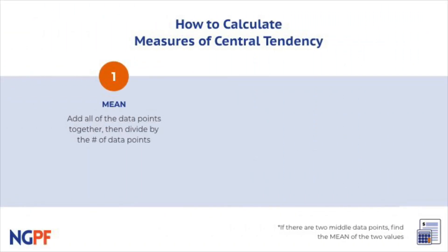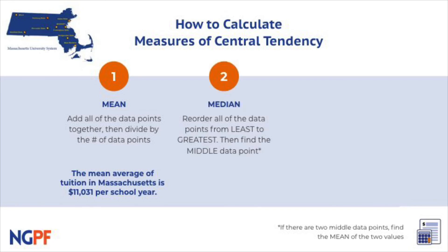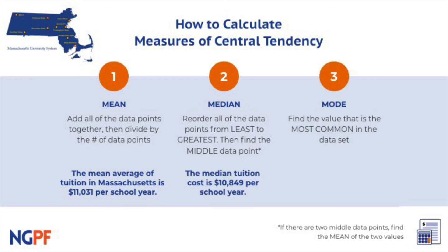Here's a recap. We found the mean or average by adding all the data points together, then dividing by the number of data points. In this example, the mean tuition cost for these nine state schools in Massachusetts is $11,031. We found the median by reordering all the data points from least to greatest, then finding the middle data point, which is $10,849. And we found the mode, which is the most common number in the data set, which is $10,600.